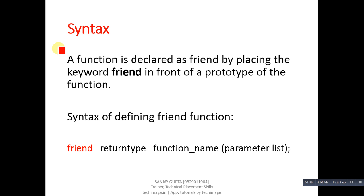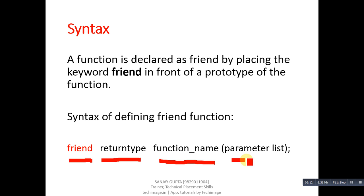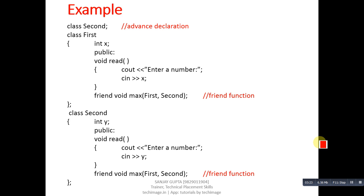Now coming on to the syntax. You can see this syntax here: the friend keyword is used before the function declaration, then the return type of the function, then the name of the function, and then the parameter list. If you want to declare any function as a friend, you simply put the keyword friend with the function declaration.